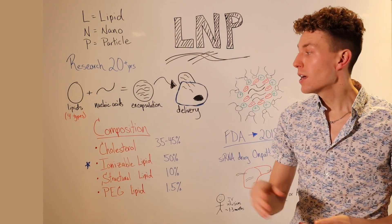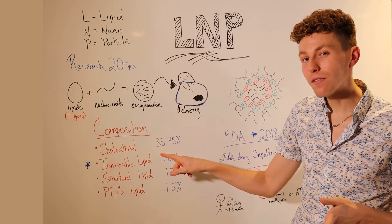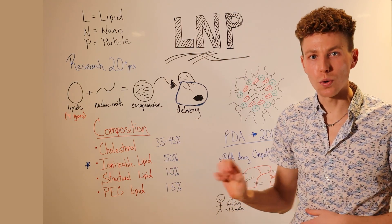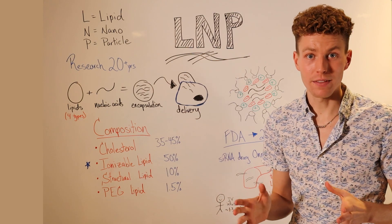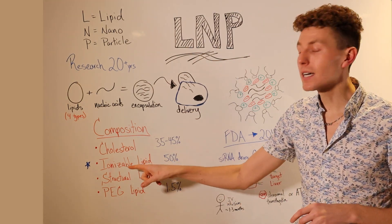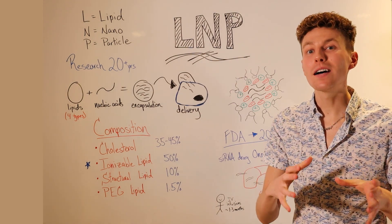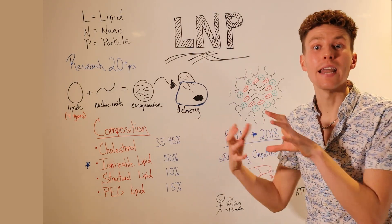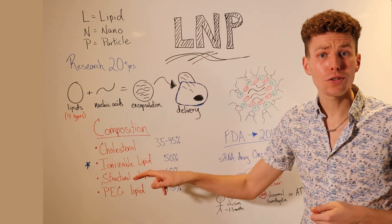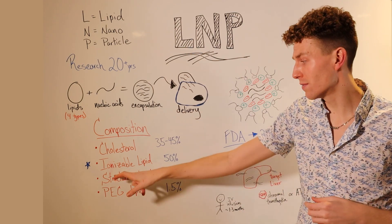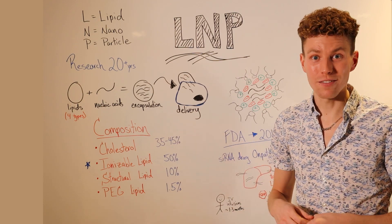Lipid nanoparticles are made of four types of lipids: cholesterol, which is around 35 to 45% of the total LNP; ionizable lipids, which is the most important part of the LNP at around 50%. That's because those ionizable lipids are positively charged, and that positive charge is able to interact with the negative charge of, say, mRNA, to help bring it into our cells. Typically there are around hundreds to thousands of different ionizable lipids that are screened to find the right one that's going to work for the drug of interest.